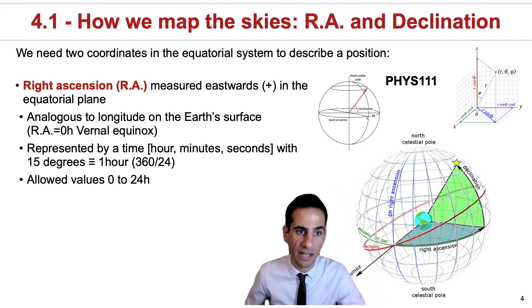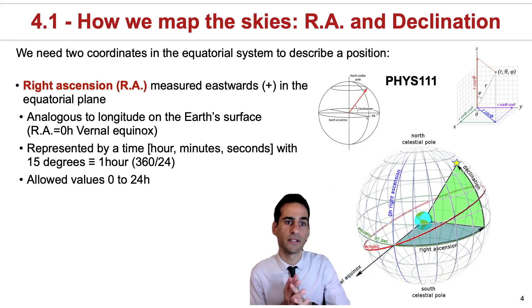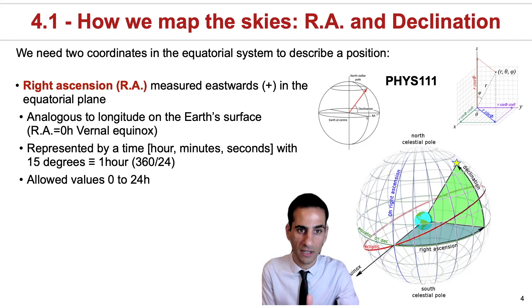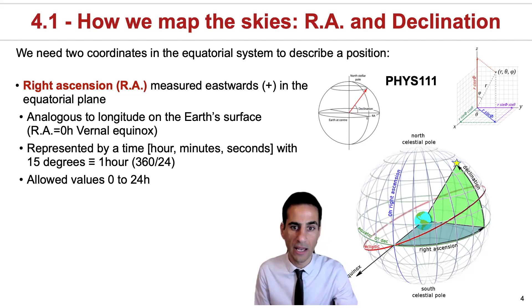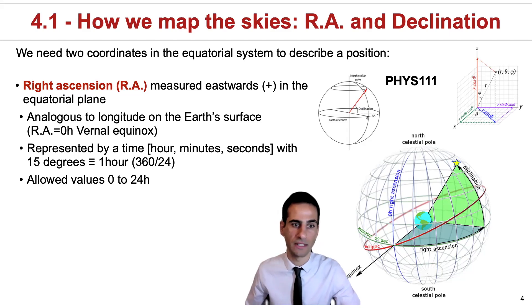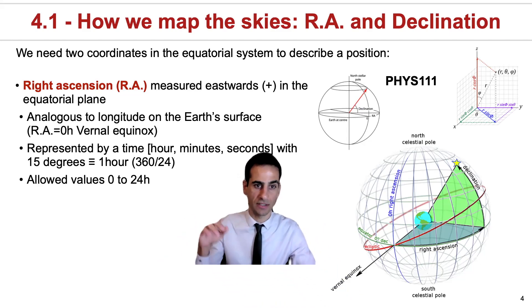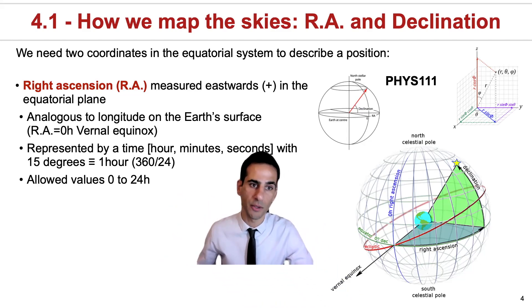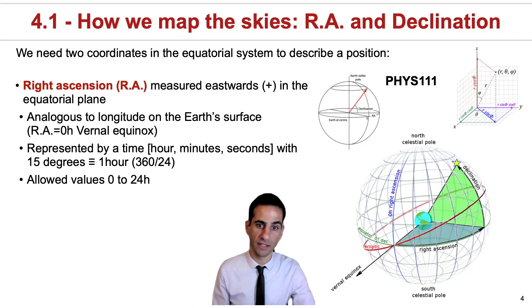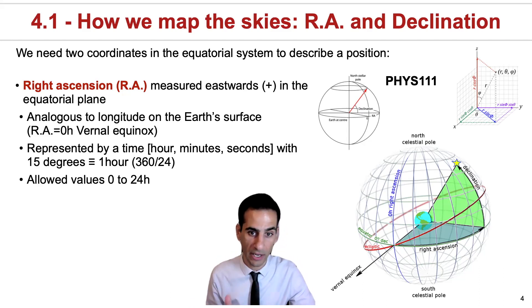Right ascension is essentially analogous to longitude on the Earth's surface, and it is measured in hours. Therefore, coordinates are typically given in hours, minutes, and seconds, even though sometimes we also measure them in degrees. Because they're measured in hours, the allowed range is essentially from zero to 24 hours, and the zero hour is defined with the vernal equinox.